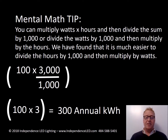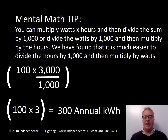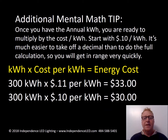Or you can divide the watts by a thousand and then multiply by the hours. We found that it's much easier to divide the hours by a thousand and then multiply by watts. So now you have 100 times 3 — that gets you the 300 annual kWh.